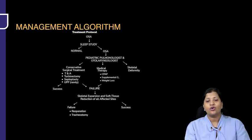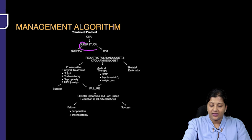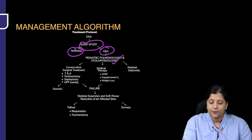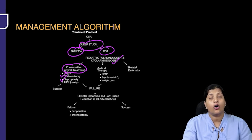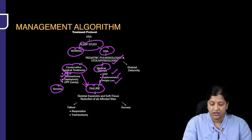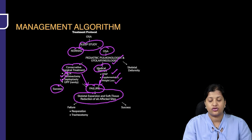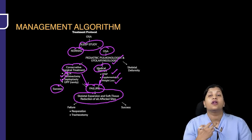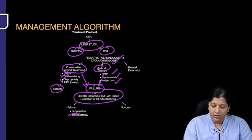The algorithm: always do a sleep study. If normal, do nothing. If the sleep study shows OSA, consult a pulmonologist and ENT together. Consider conservative surgical treatment like tonsillectomy and adenoidectomy, turbinectomy, septoplasty, or rarely palatal surgery. If there is success, no further action. If they fail conservative surgery, think of skeletal expansion — jaw distraction or maxillary-mandibular advancement. If that doesn't help, tracheostomy is the last resort, not the first operation.